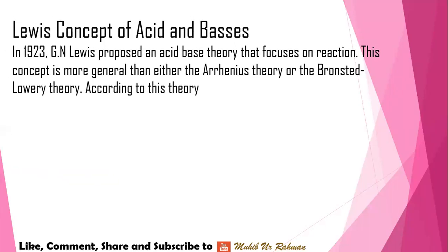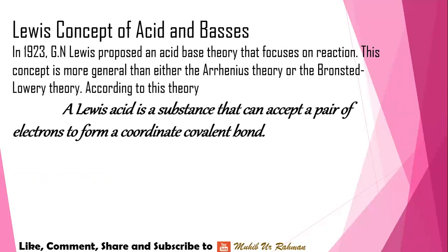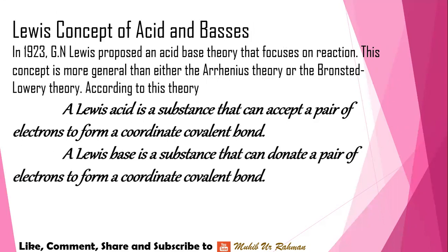In 1923, G.N. Lewis proposed an acid-base theory that focuses on electron pairs rather than protons. This concept is more general than either the Arrhenius theory or the Brønsted-Lowry theory. According to this theory, a Lewis acid is a substance that can accept a pair of electrons to form a coordinate covalent bond.